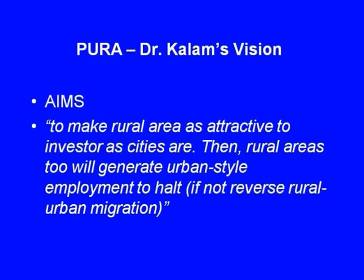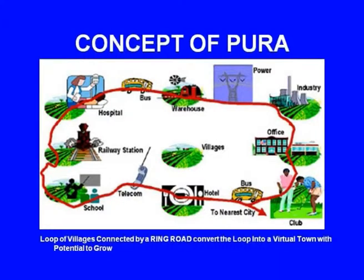The originator of this scheme is our honorable past president, Dr. A P J Kalam. As per his vision, the aims of PURA is to make rural areas as attractive to investors as cities are. Then rural areas too will generate urban style employment to halt, if not reverse, the rural-urban migration. This slide shows the overall concept of PURA, where a group of villages would be connected by a ring road to convert them into a virtual town, with a potential to grow, with all amenities being shared. For this, a rural model has been envisaged.